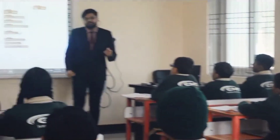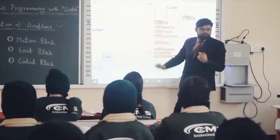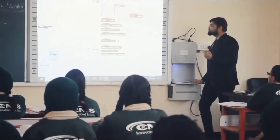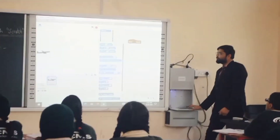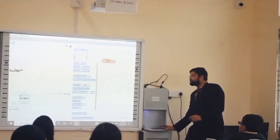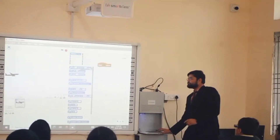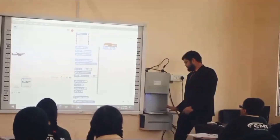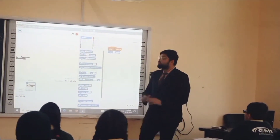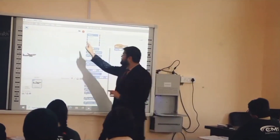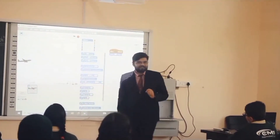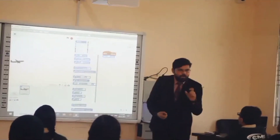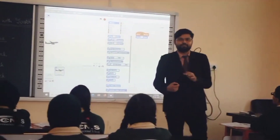Yes. Now we have a green flag click — what's next? We need to go to the motion section. Take the motion block and place it. If I play this, the aeroplane will move. I want to slow down the speed — what do we do?